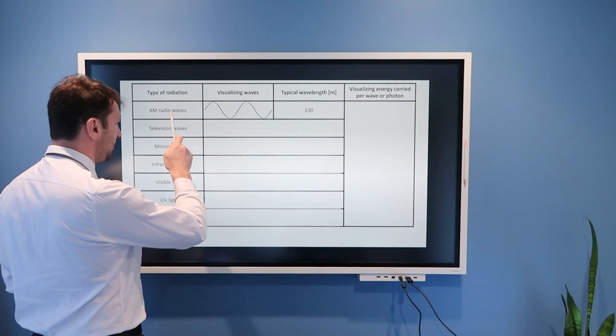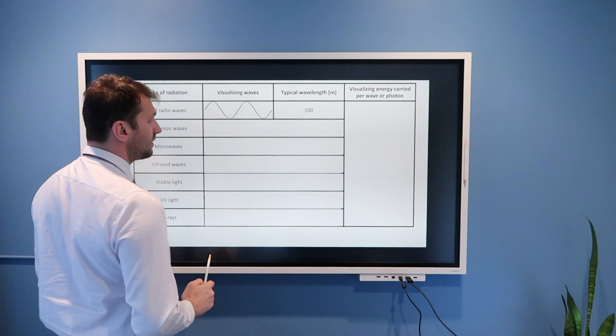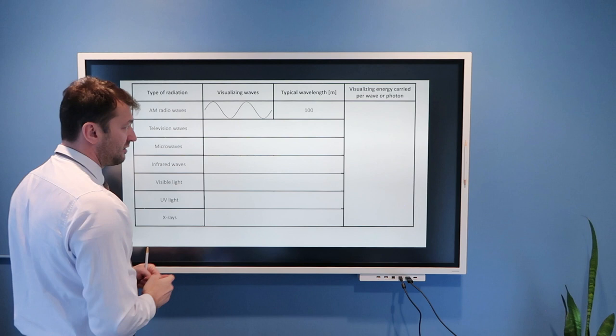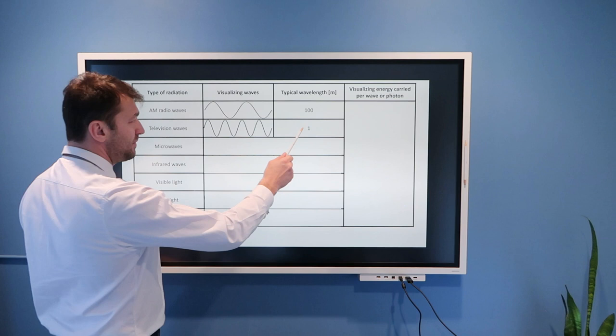First, if we start with AM waves, let's say this is their wavelength, and typical wavelength is 100 meters, so clearly this is not to scale. But it will help you to compare AM waves with other waves. Now, if we go to television waves, TV waves, typical wavelength is about 1 meter,